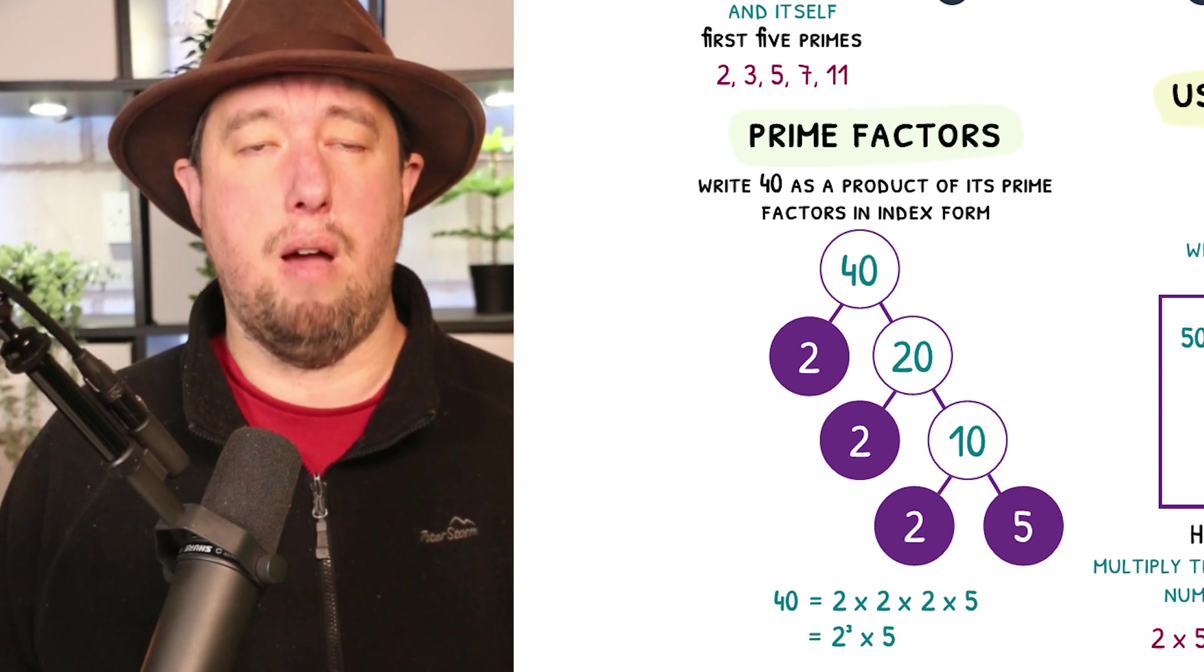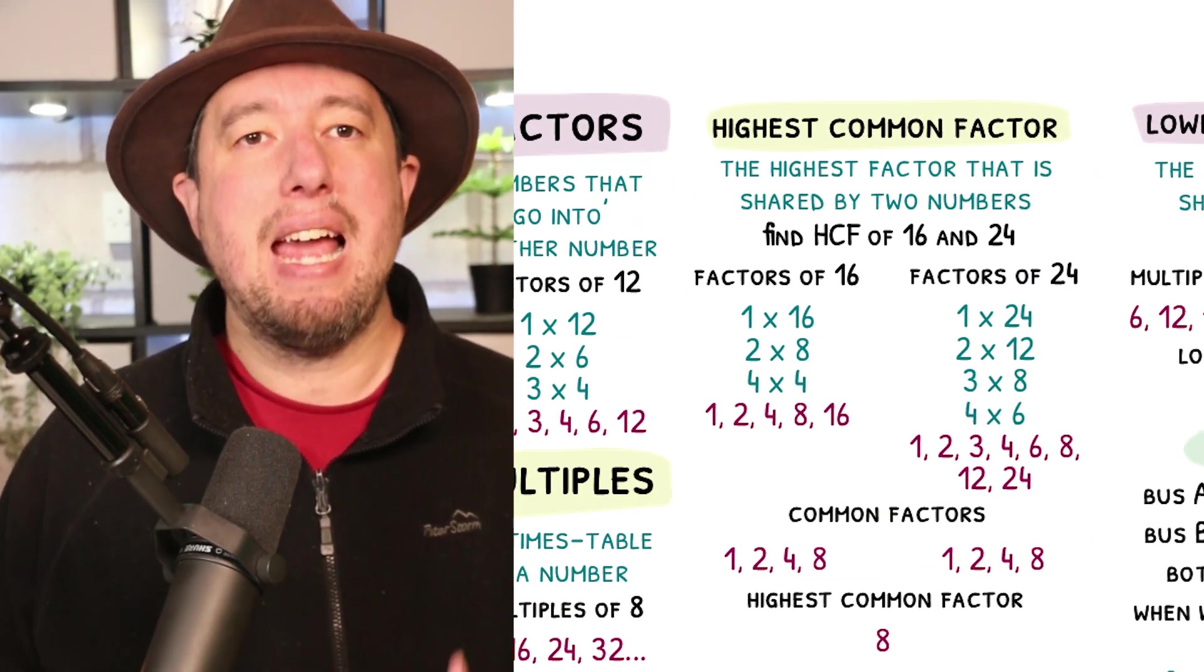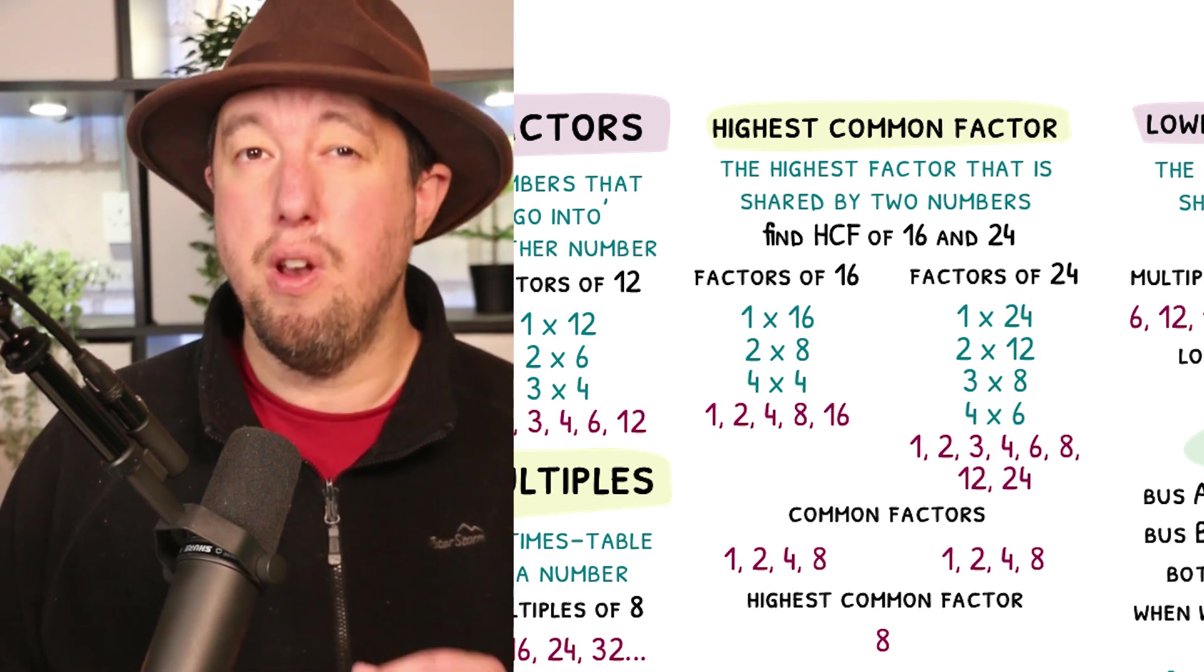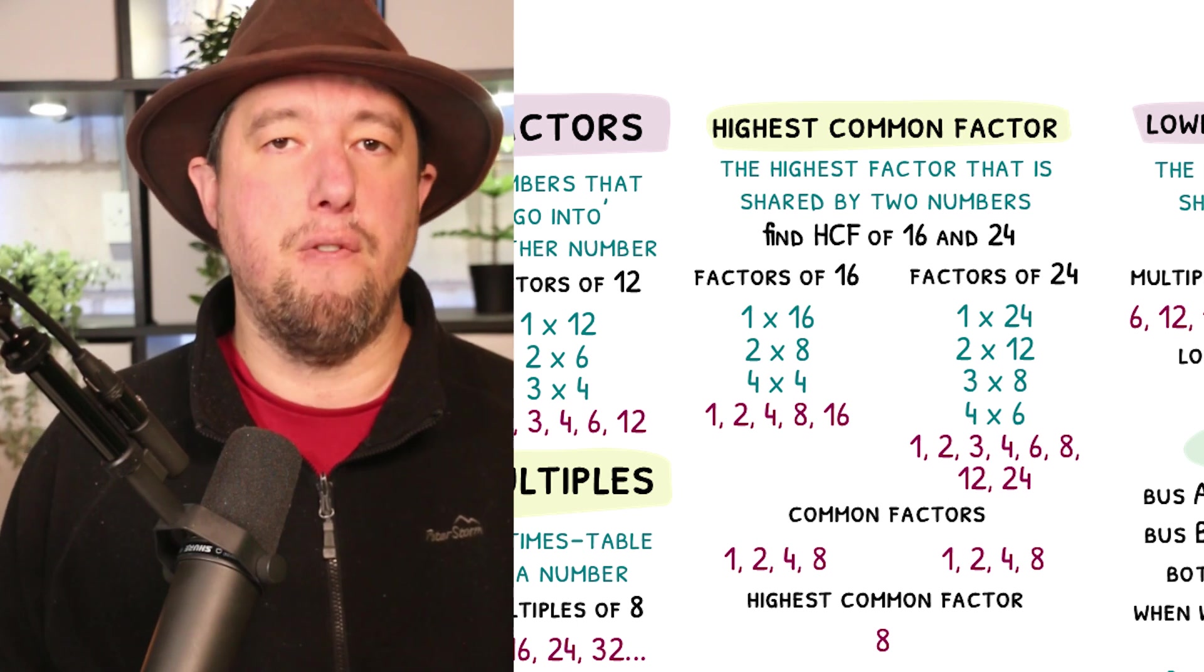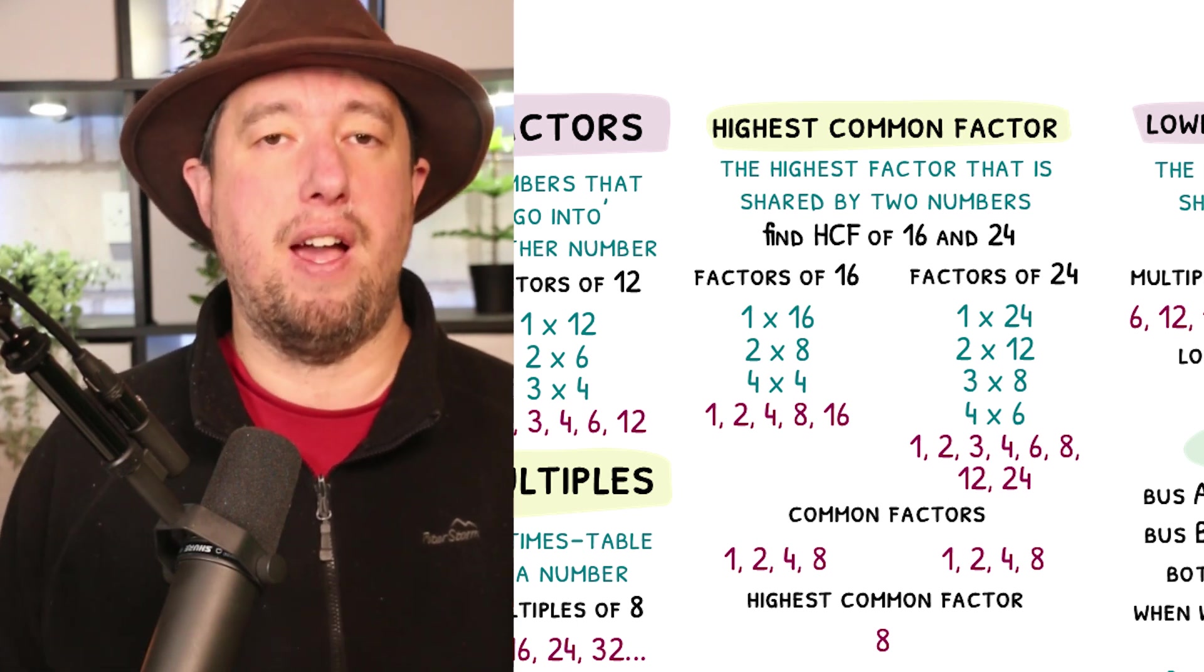Highest common factors, or HCF for short, are exactly what you would expect them to be. They are the largest factors that 2 numbers share. The common factors of 16 and 24 are 1, 2, 4 and 8, so the highest common factor is 8.